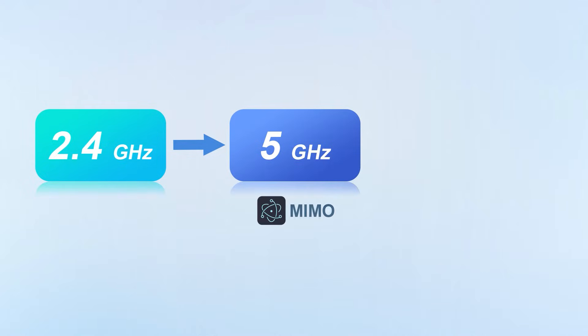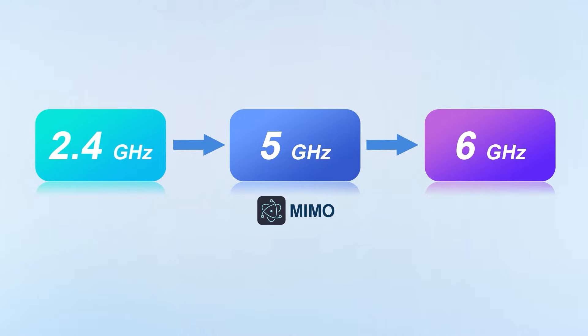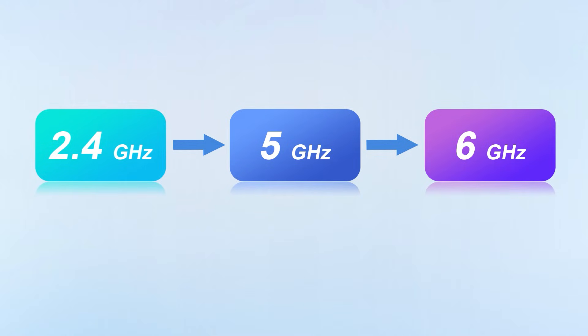Later, with the improvement of Wi-Fi and the addition of multi-input and multi-output antennas, the 5 GHz frequency band was put into use. And in recent years, the 6 GHz frequency band was introduced to support Wi-Fi 6E and Wi-Fi 7 technologies.